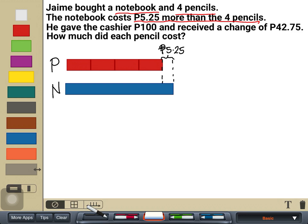And let's label that as 5 pesos and 25 centavos. He gave the cashier 100 pesos and received the change of 42.75. And the question is, how much is each pencil?